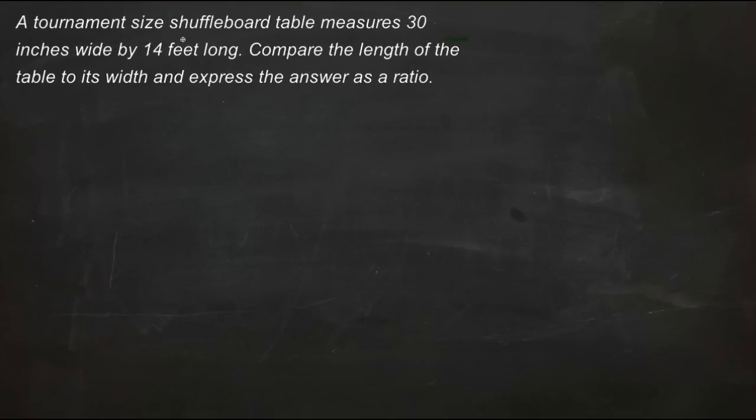Here's a question you probably haven't thought about recently. A tournament-sized shuffleboard table measures 30 inches wide by 14 feet long. Compare the length of the table to its width and express the answer as a ratio. I can't remember the last time I thought about shuffleboard tables, but it's a perfectly good way to examine ratios.